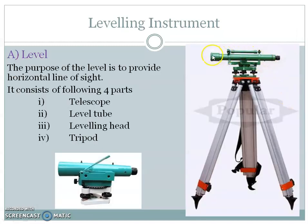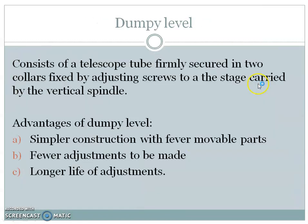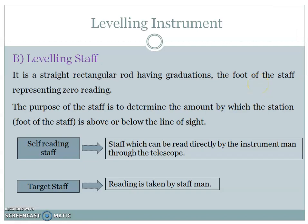In the picture it is clearly seen: this is the telescope, and the three foot screws mounted on the instrument are connected to the tripod for leveling. The second leveling instrument is the leveling staff — a straight rectangular rod with graduations. The foot of the staff represents the zero reading, and the purpose of the staff is to determine the amount by which the station (the foot of the staff) is above or below the line of sight. There are two types: self-reading staff, which can be read directly from the instrument, and target staff, which requires a person to read it. We will use a self-reading staff for experiments.